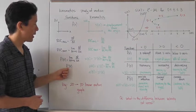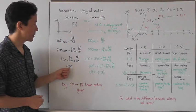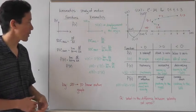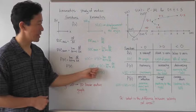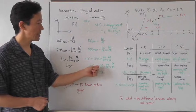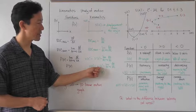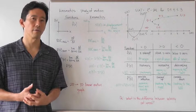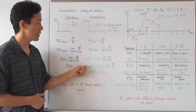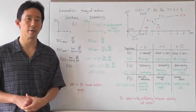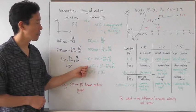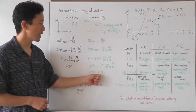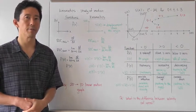When we looked at f double prime of x, that was just taking the first derivative of the first derivative. We can also do the same thing with the velocity function. Taking the first derivative of the velocity function will give us the change in velocity over the change in time, which in this case is going to be the acceleration. So acceleration can be found by taking the first derivative of the velocity function, or the second derivative of the displacement function.